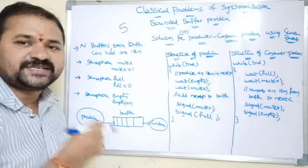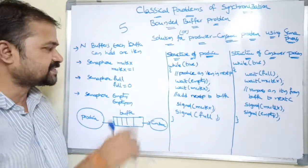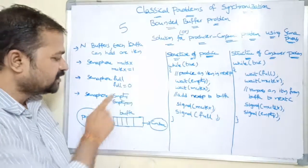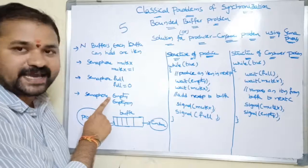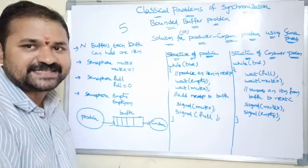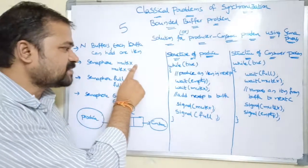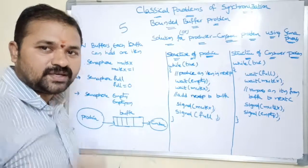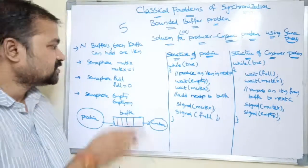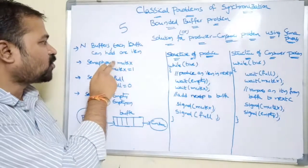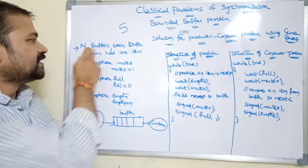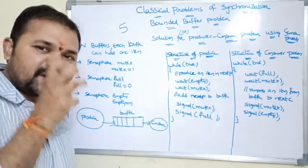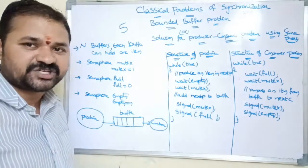We are using three semaphores in total. The first semaphore is mutex, the second is full, and the third is empty. Mutex is used for mutual exclusion — to provide security to the buffer so that only one process can enter the critical section at a time.